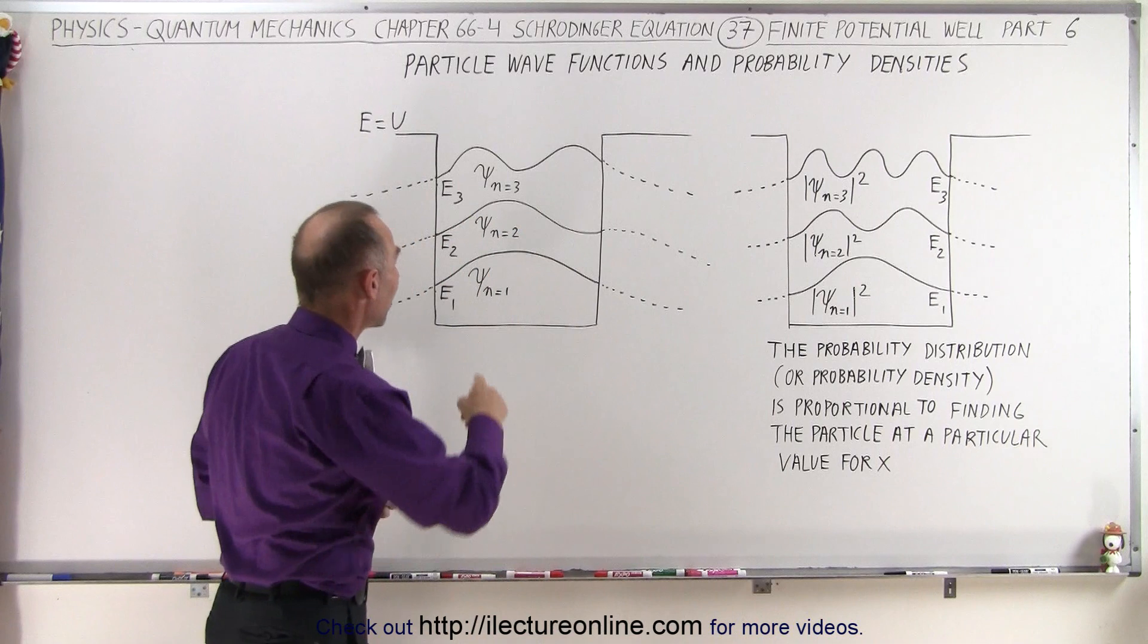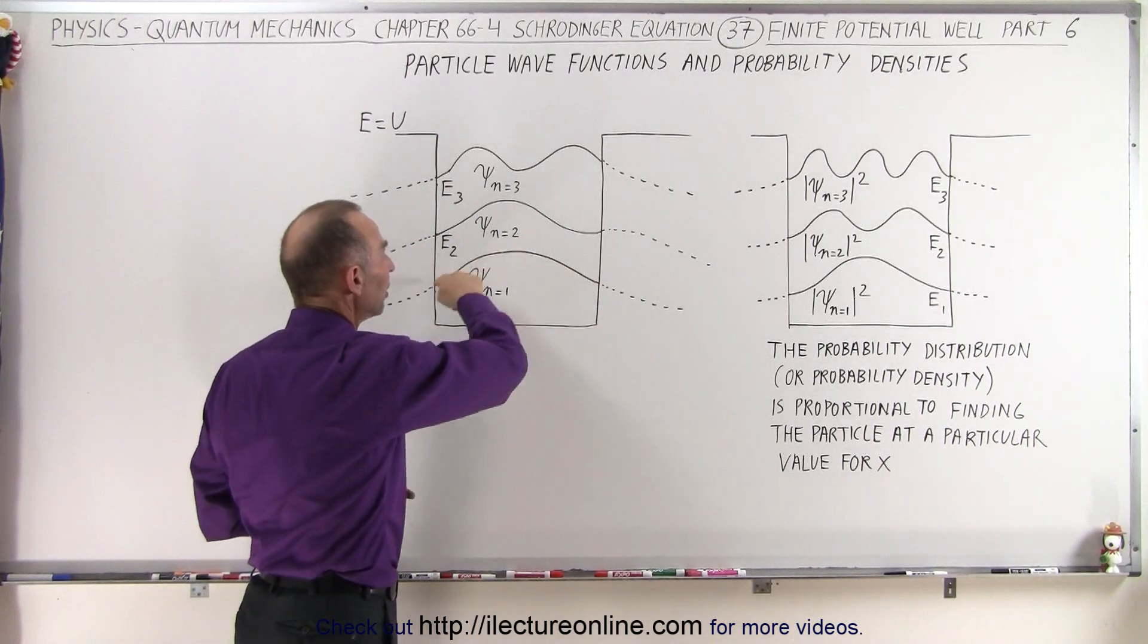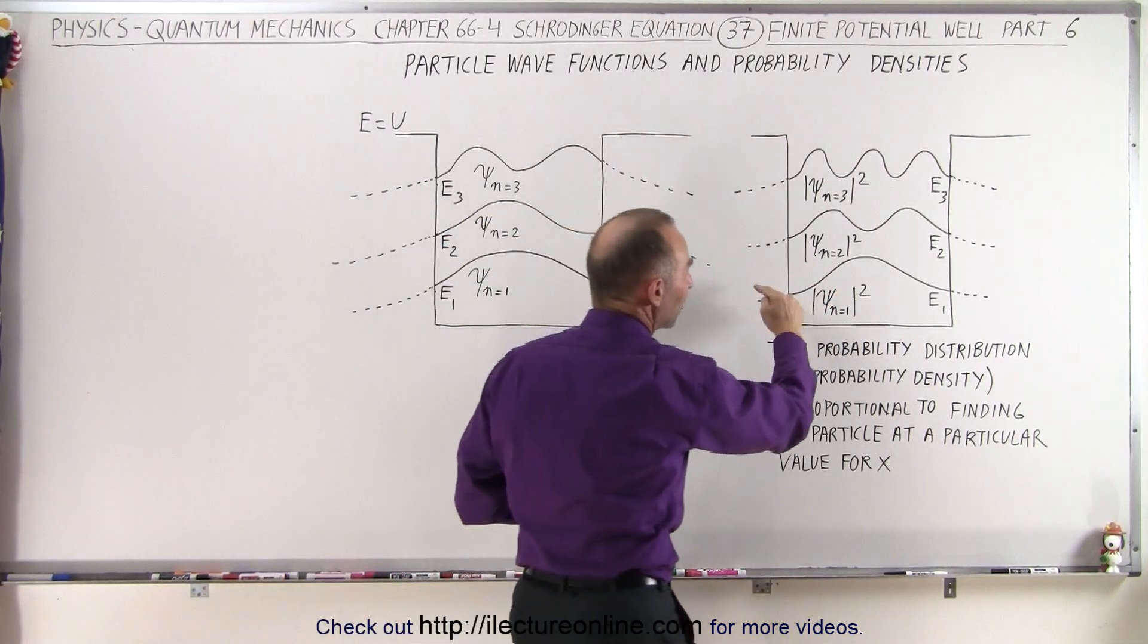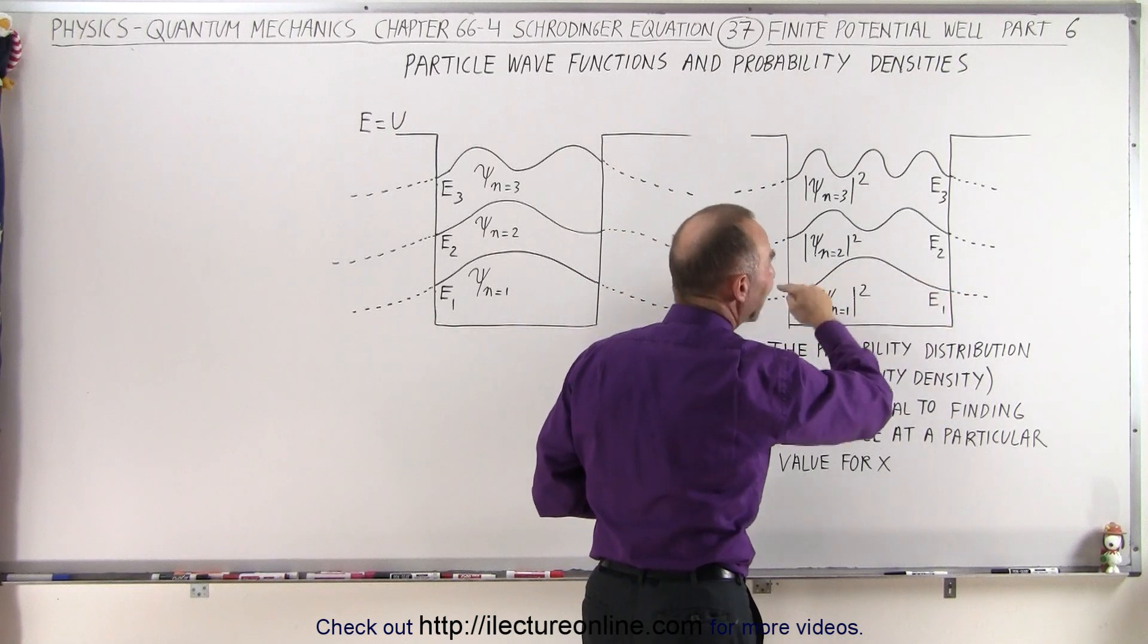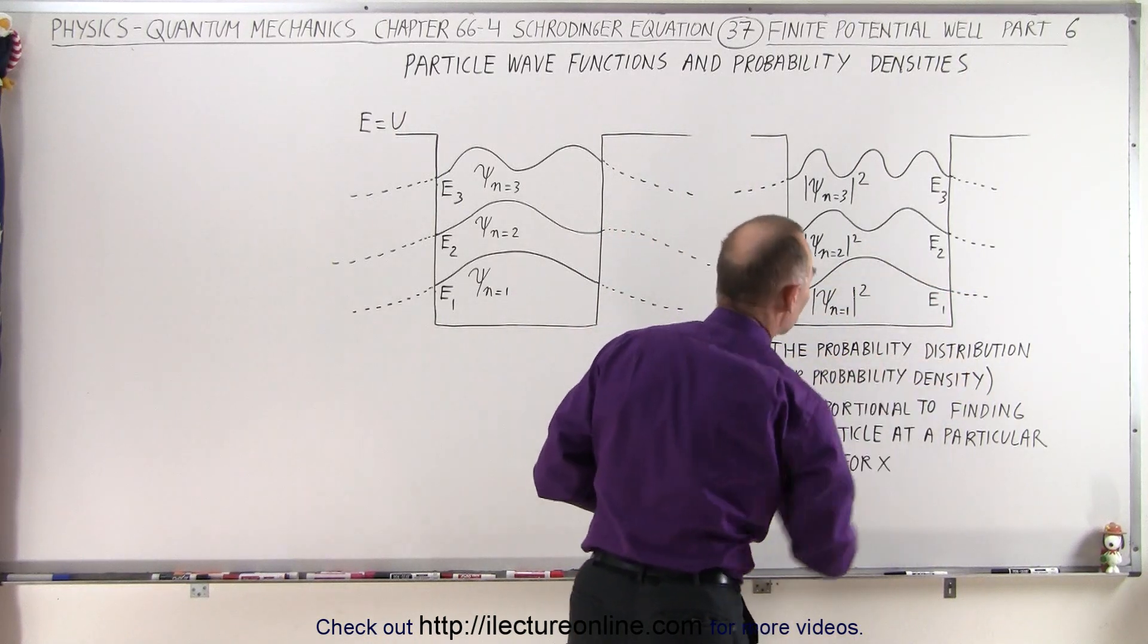That way you can see that if this is the wave function, then if we square that wave function, we get what we call the probability density function or the probability distribution function.